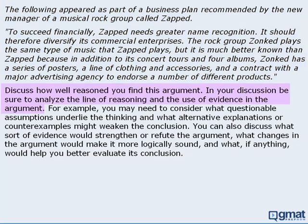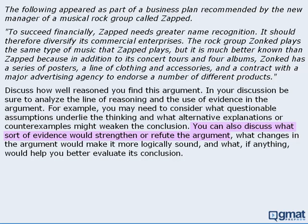The instructions tell you to analyze the line of reasoning and the use of evidence in the argument. This means identifying questionable assumptions and providing alternative explanations or counter-examples that could weaken the conclusion. Included in your analysis, you can discuss evidence that would strengthen or weaken the conclusion, suggest changes that would make the argument stronger, and identify what might help you better evaluate its conclusion.